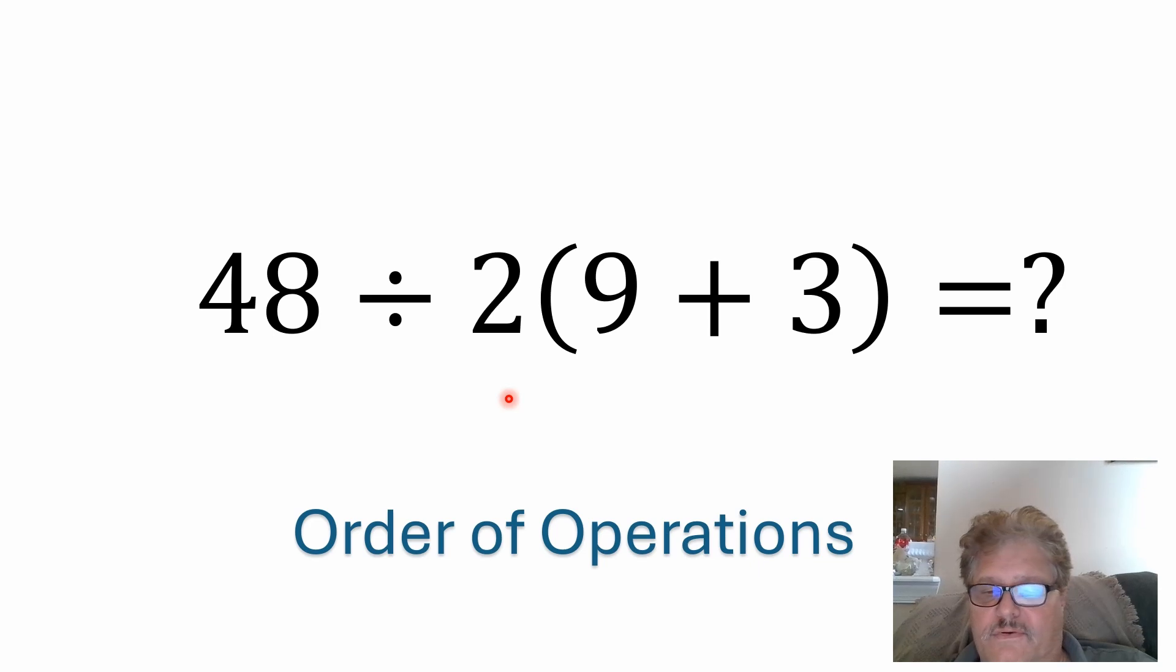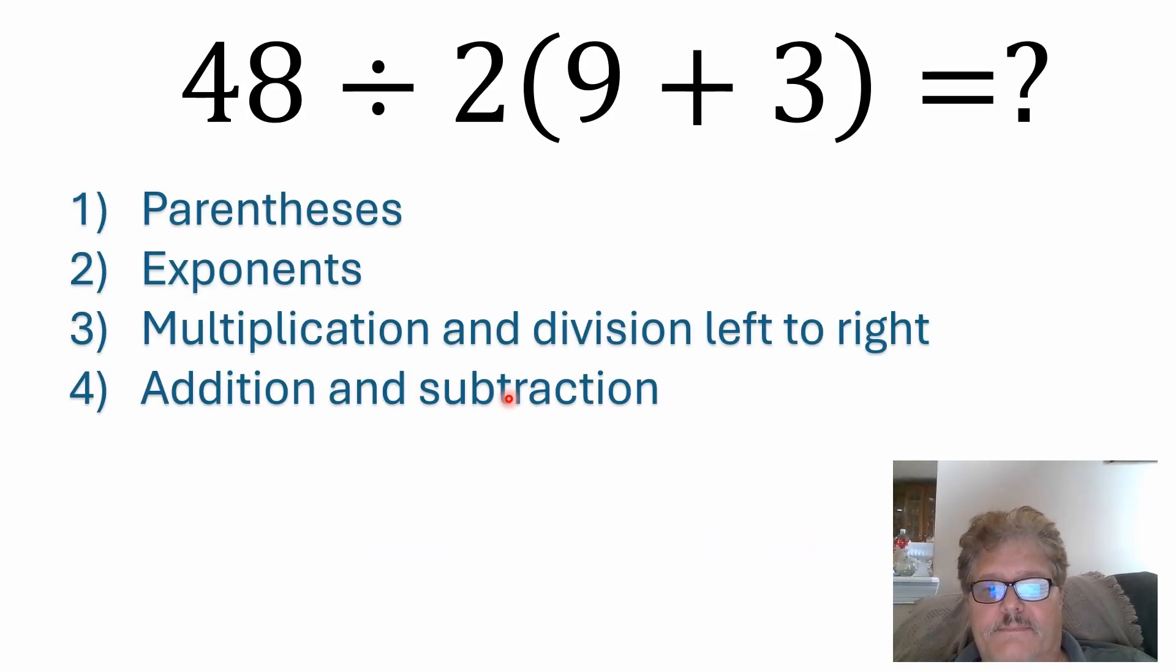So first of all, the order of operations. What is the order of operations? Now basically, if you are from North America, you're probably familiar with PEMDAS. It's an acronym that describes parentheses, exponents, multiplication and division left to right, and then finally addition and subtraction. The big thing that people mess up on is the fact that multiplication and division have equal precedence and they're solved left to right. Division is the same thing as multiplying by a reciprocal. So you really just solve multiplication and division left to right.